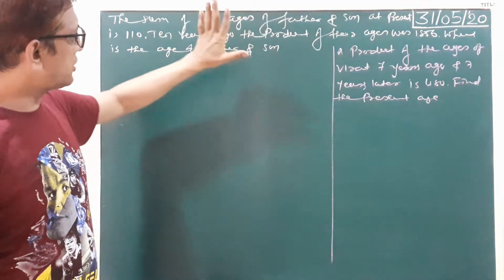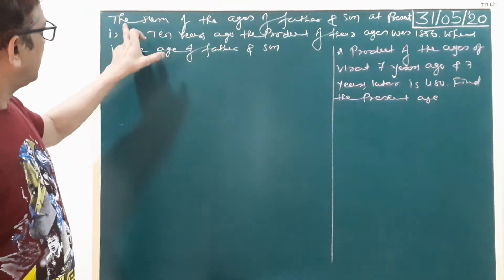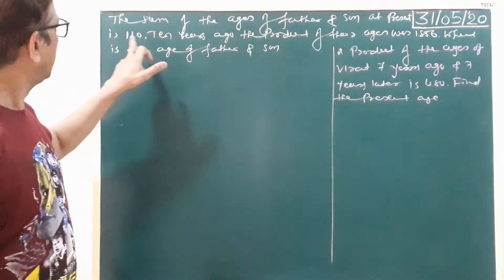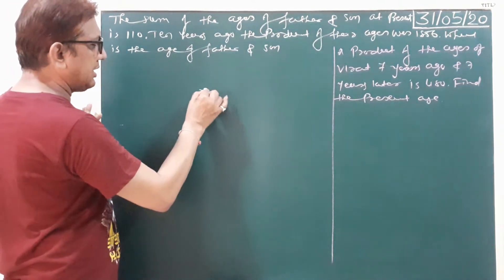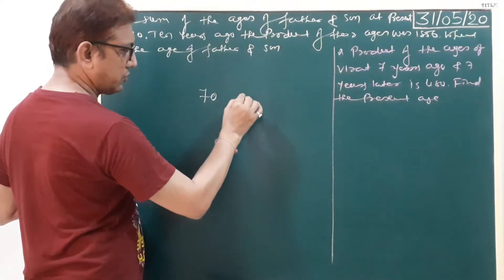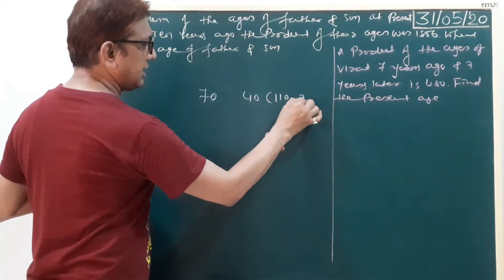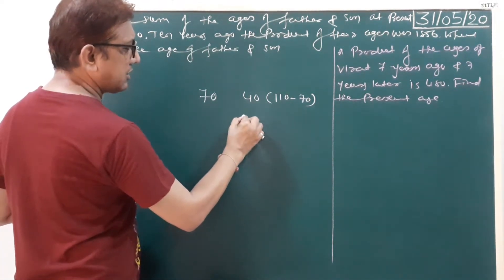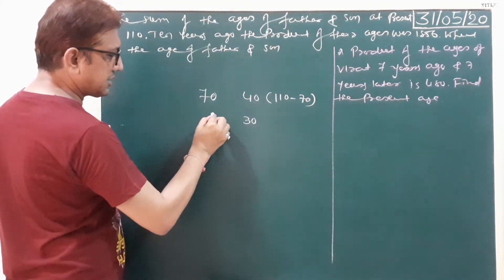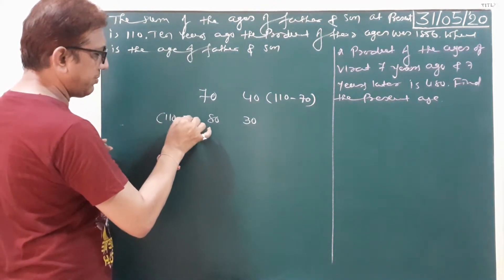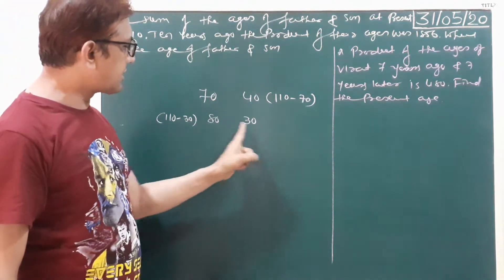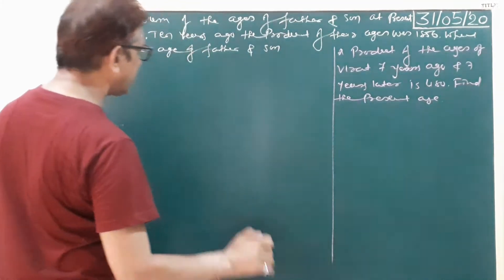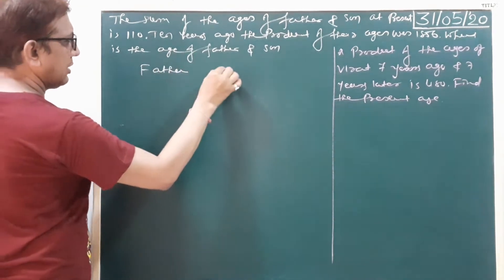Here we write two questions: first one, then solve this, then second one. The sum of the ages of father and son at present is 110. Suppose father is 70, so son's age was 40. That is 110 minus 70. If you suppose the son's age was 30 years, so father's age was 80 years — 110 minus 30. That means the sum of these two persons is always 110 years, so first we suppose any one of the person's age. Here we write father and son.